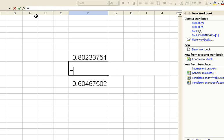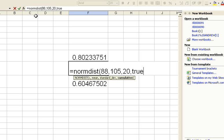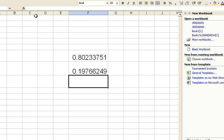Here I'm going to enter the norm dist of 88, 105, 20, true. And then my probability is just going to be the difference. That minus that, and I get 0.6047.